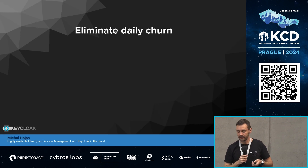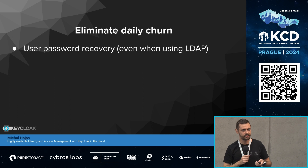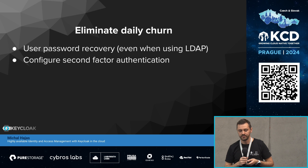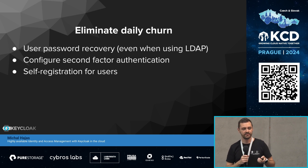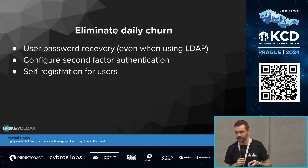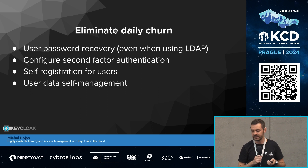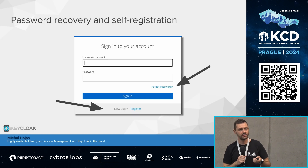Keycloak also helps you eliminate daily churn. Users can recover their passwords on their own — you don't need to solve tickets for that. They can configure second-factor authentication themselves, and you can make it compulsory for each user. They can self-register if you enable that with a button click in the admin console. And they can manage their own data — change their email, first name, last name, and so on. The login form would then show 'forgot password' and 'register' buttons.